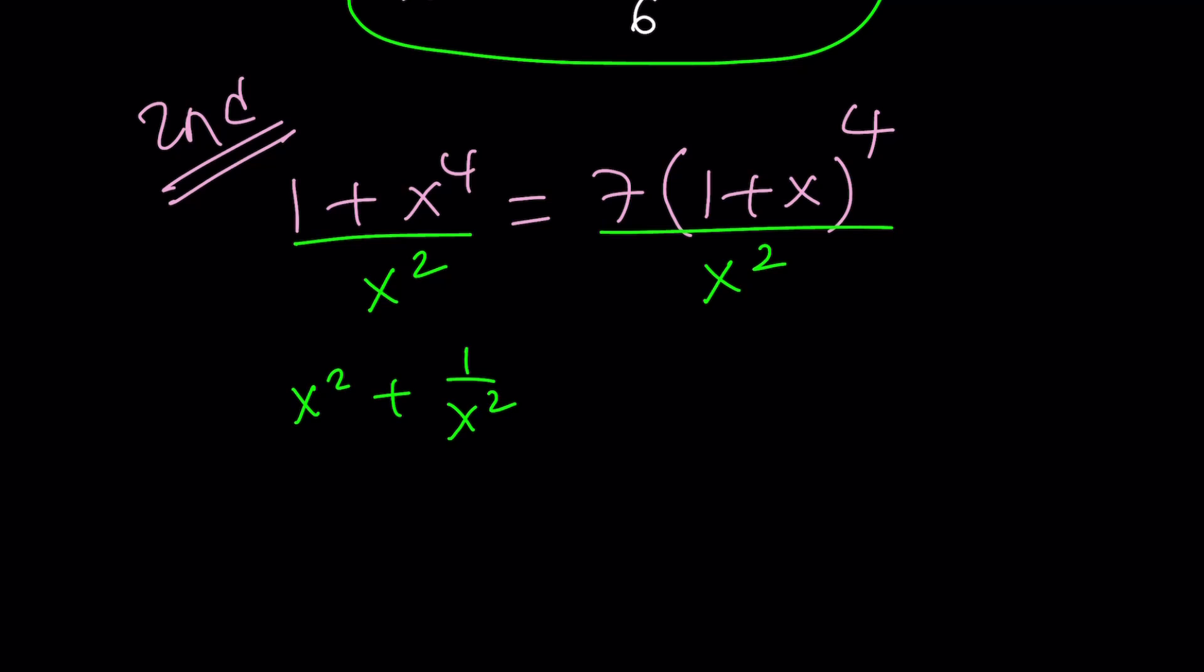And then this is going to give you x squared plus 1 over x squared on the left-hand side, which is promising, right? And on the right-hand side, I want you to do the following. Write this as 7 times 1 plus x squared divided by x and all of that is squared because we have a 4th power.